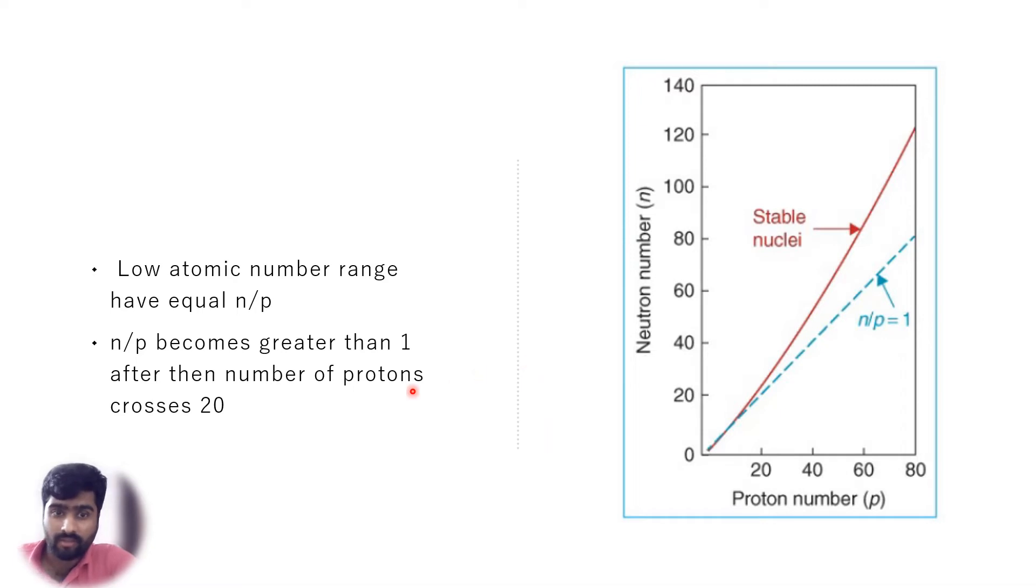If you consider isomers, they represent identical atoms except they differ in their nuclear energy state. For instance, stable elements in the low atomic range have equal number of protons and equal number of neutrons, so the ratio is equal to one.